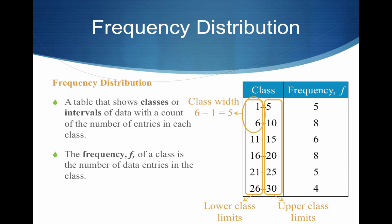Occasionally I'll ask you to calculate the class width. To do so, you simply subtract two adjacent lower class limits. In this situation we'd take 6 minus 1 to get a class width of 5. Note we could use any adjacent lower class limits — for example, 16 minus 11 also gives us a class width of 5.